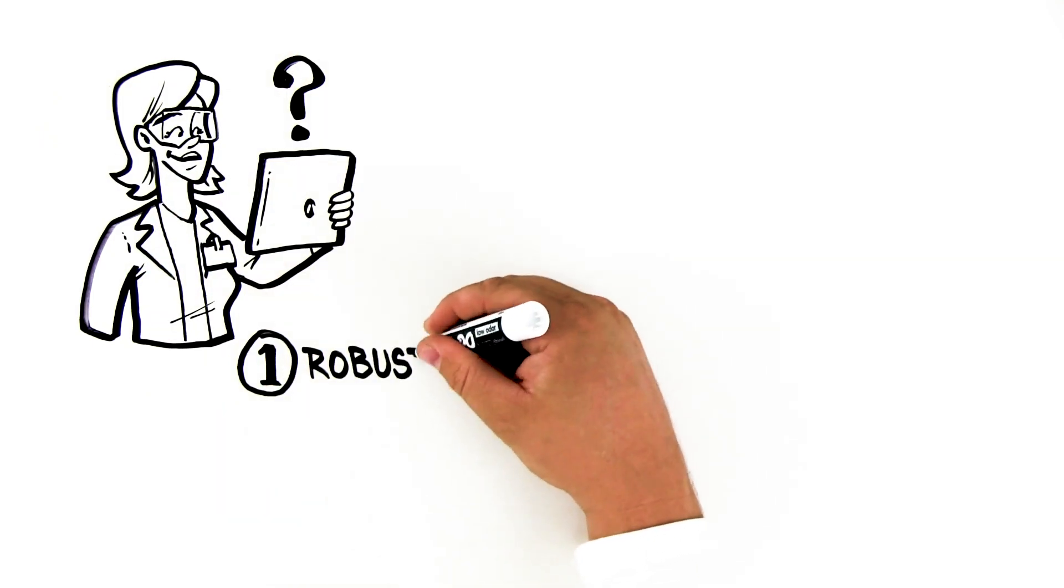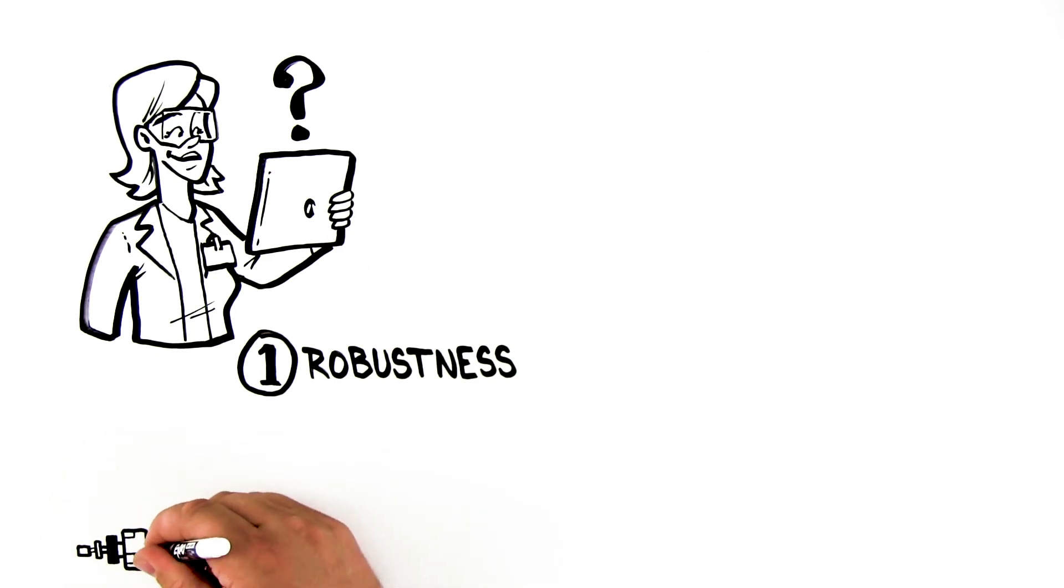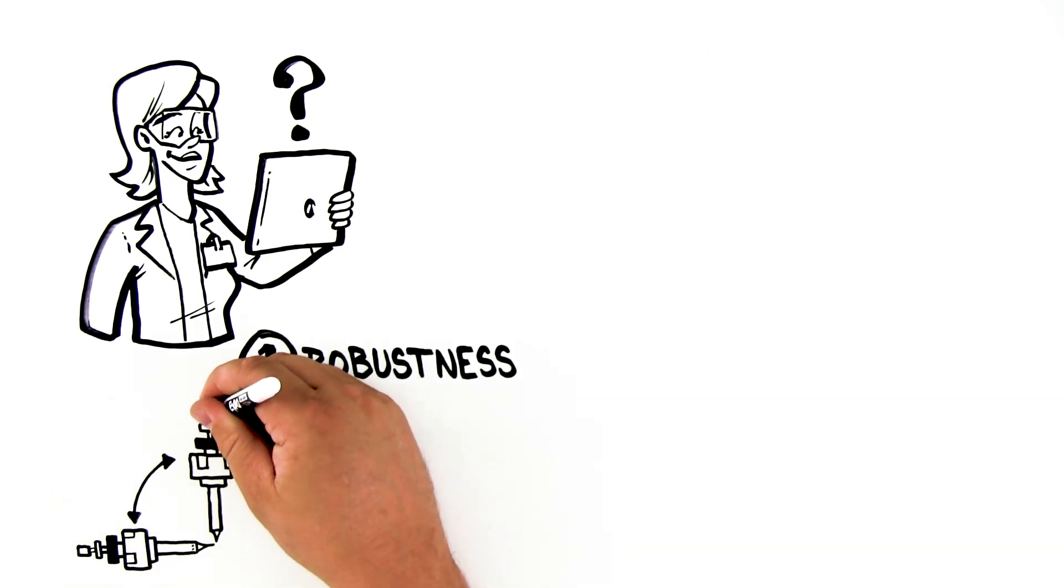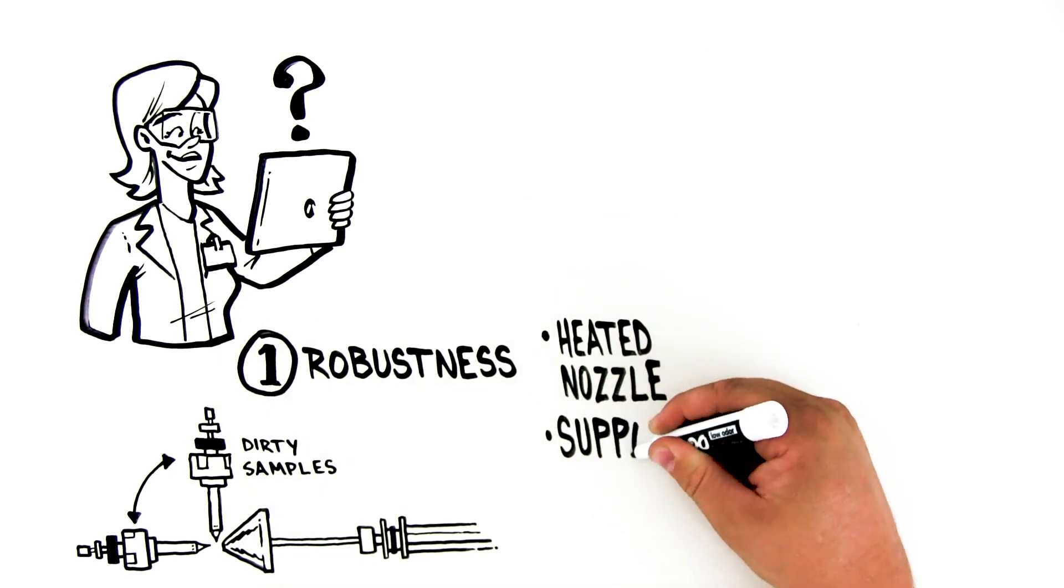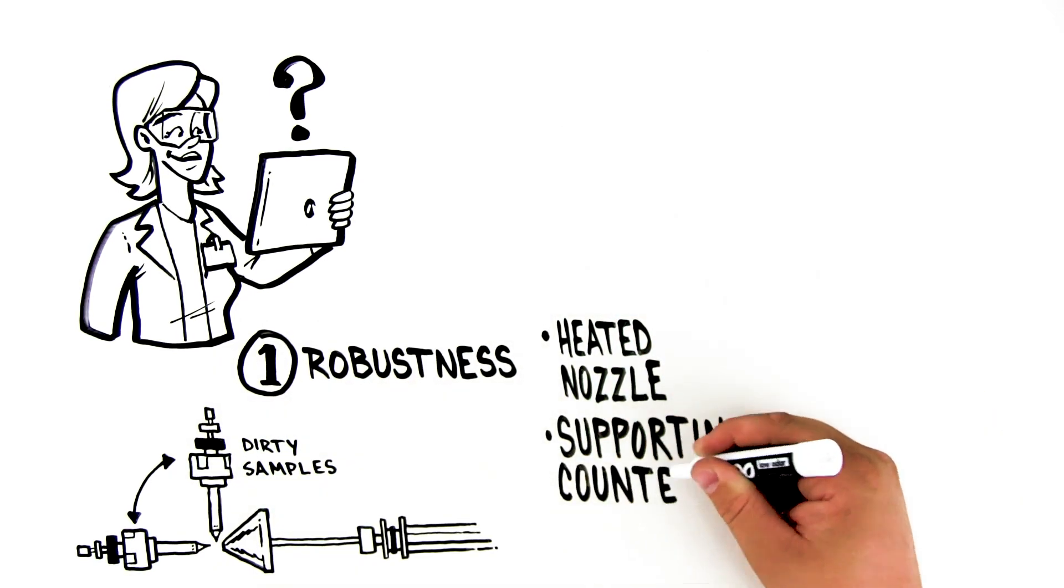First, Jenny considers robustness. An ion source that is orthogonal to the ion transfer tube more efficiently handles dirty samples. A heated nozzle and supporting and counter gas flows further benefit robustness.